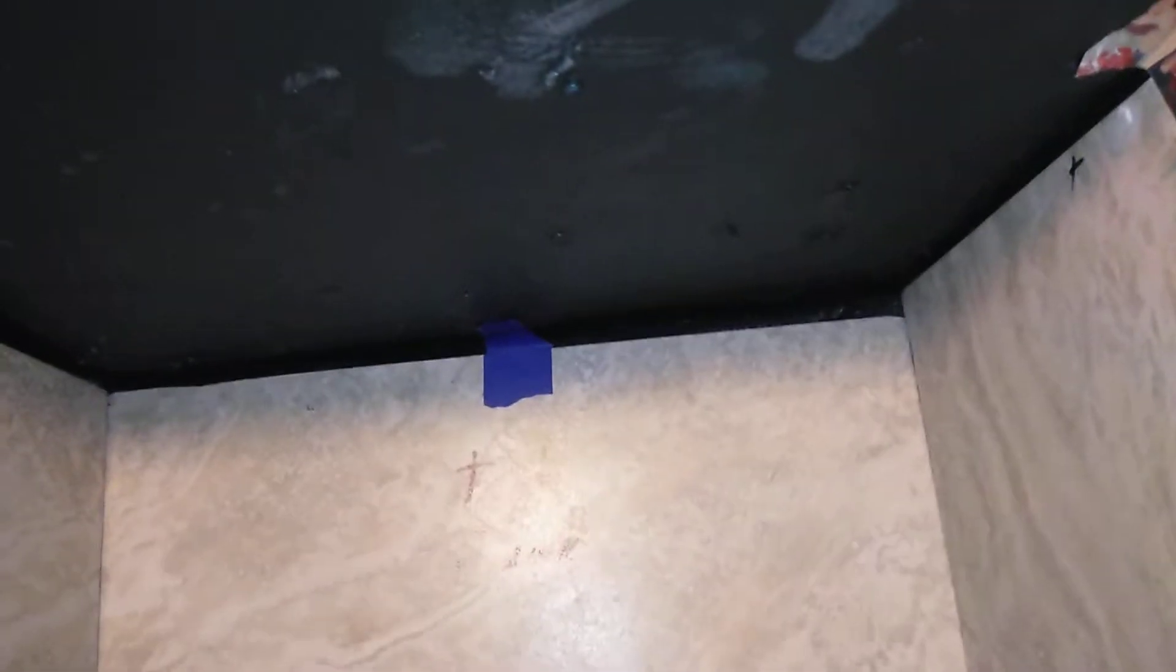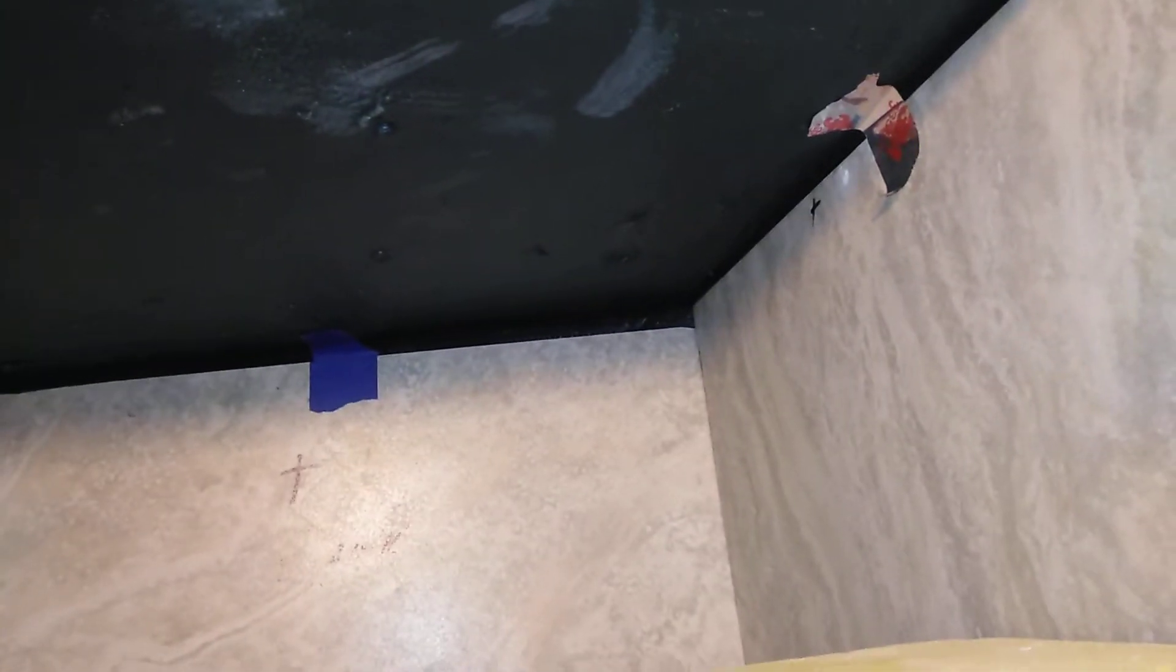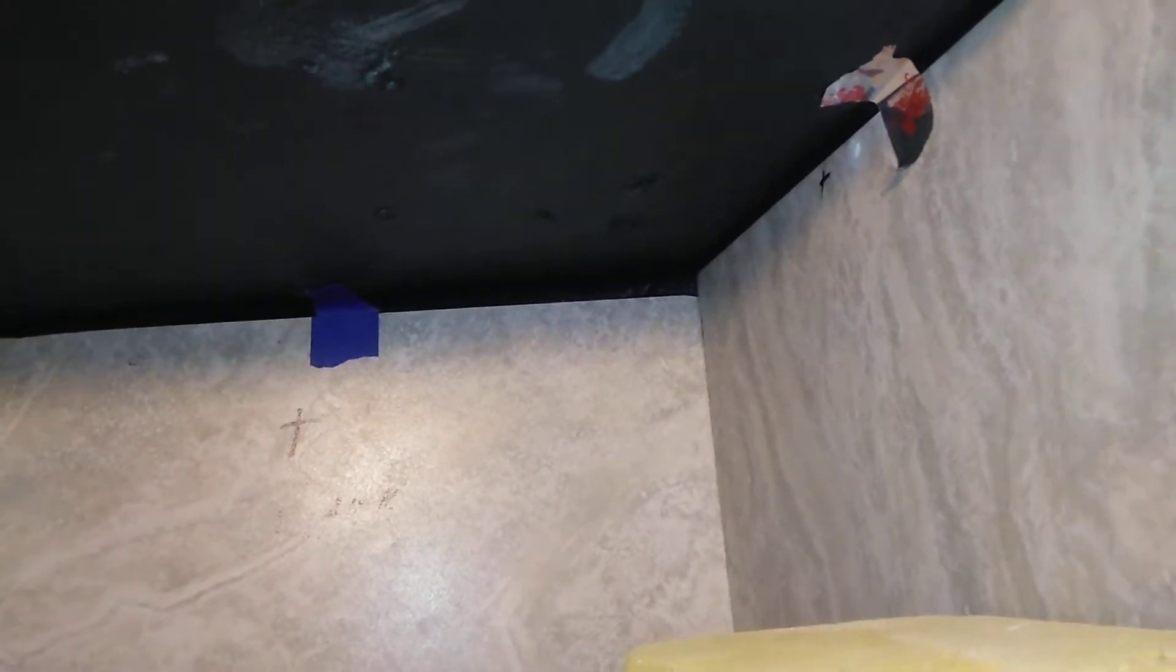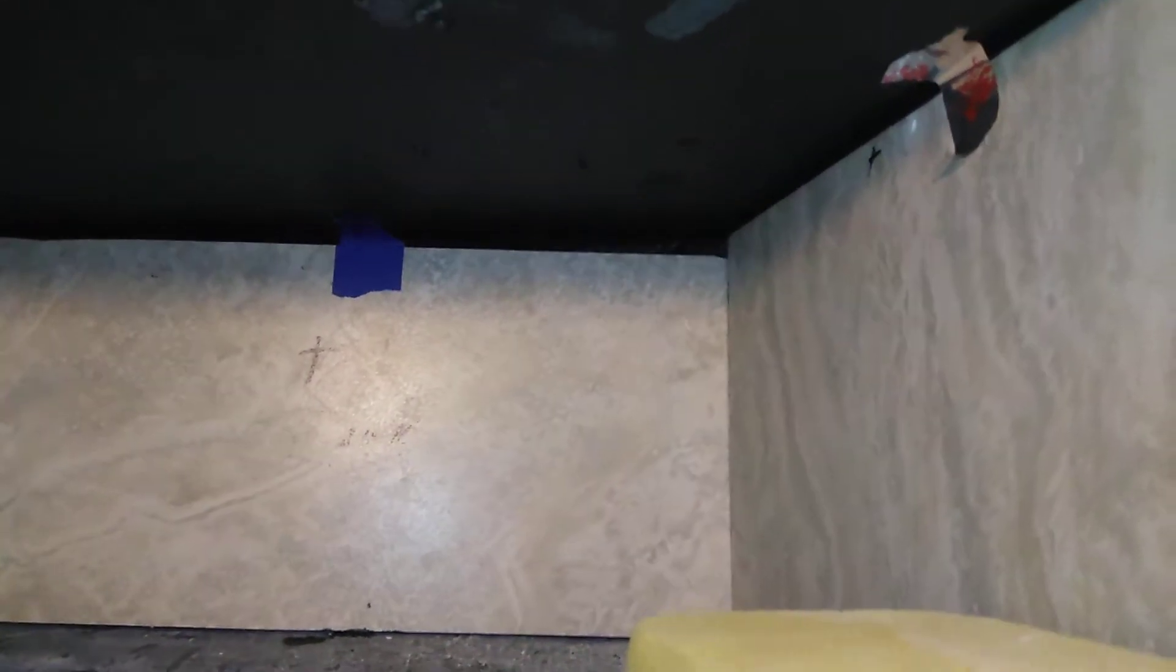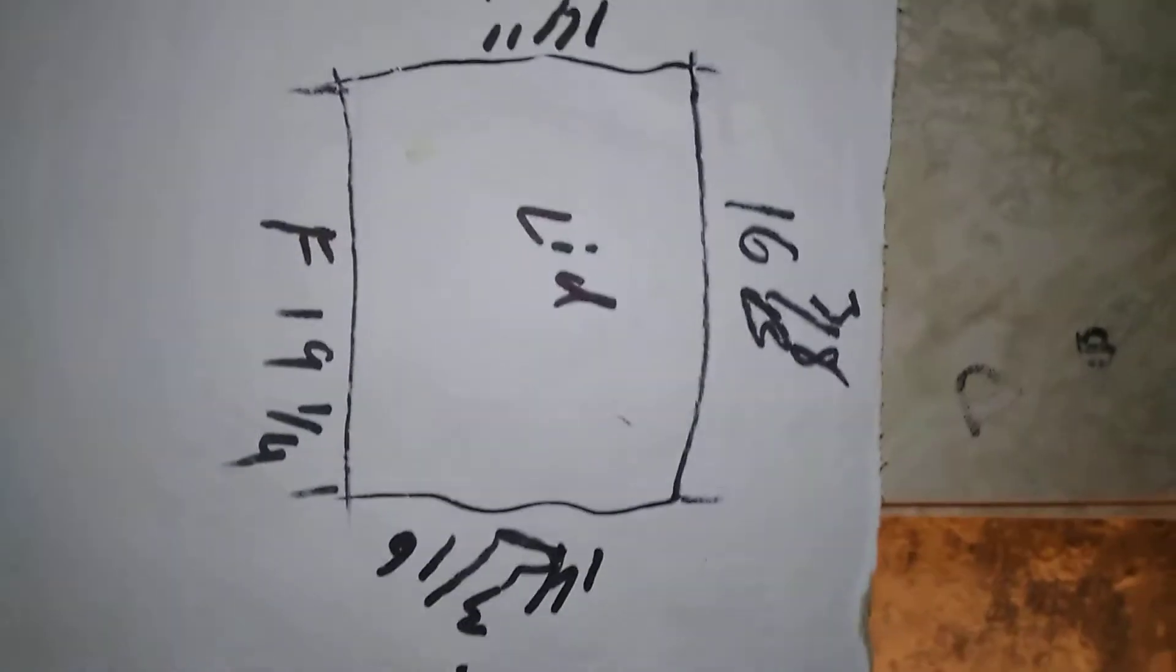Here you can see I have it all watersealed. What I like doing when you're doing something like this - you could be running base or crown in a bedroom, living room, or something as simple as this - what I like to do is draw a rough diagram of it.